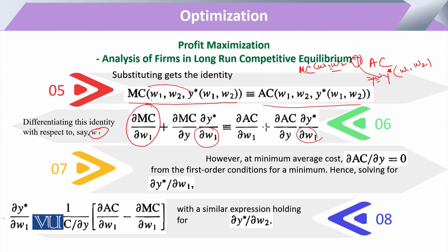If we look at the minimum average cost curve, the minimum point occurs where the change in the average cost curve equals zero. If we draw the cost curve, we can see the average cost curve and the marginal cost curve, and at their intersection point, the marginal cost equals the average cost — that is the minimum level of average cost. From this we can solve and find the result.